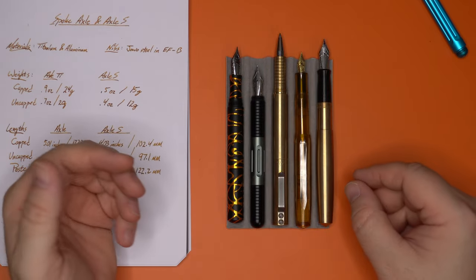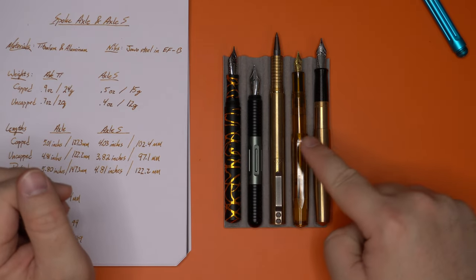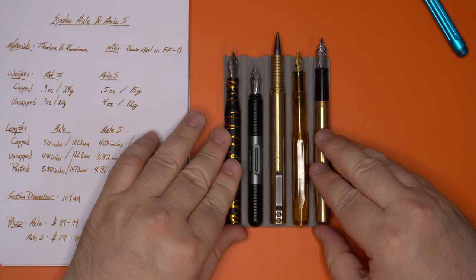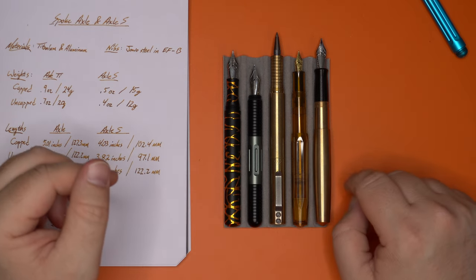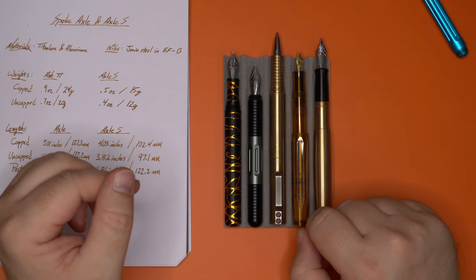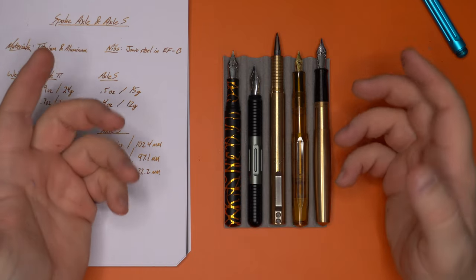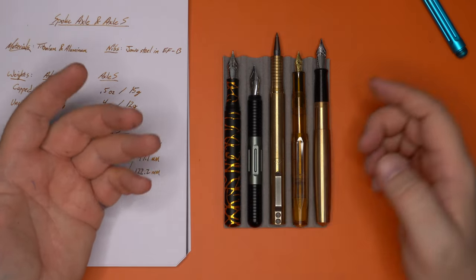All right, so here are the pens in their posted configurations. And you can see that the Axle S comes in very short compared to a lot of other pocket pens, including the Schoen Design Pocket 6, the Kaweco, the Gravitas, and the other Schoen Anniversary ballpoint pen or rollerball in this configuration. This is quite short, but nonetheless, totally long enough to use.